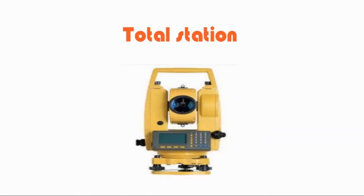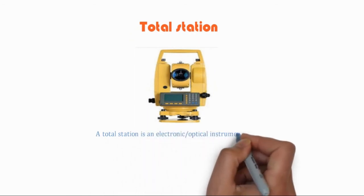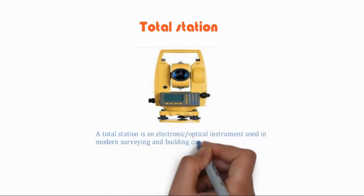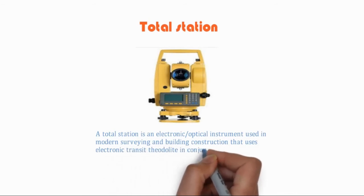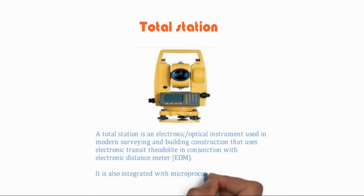A Total Station is an electronic or optical instrument used in modern surveying and building construction that uses electronic transit theodolite in conjunction with electronic distance meter. It is also integrated with microprocessor, electronic data collector, and storage system.